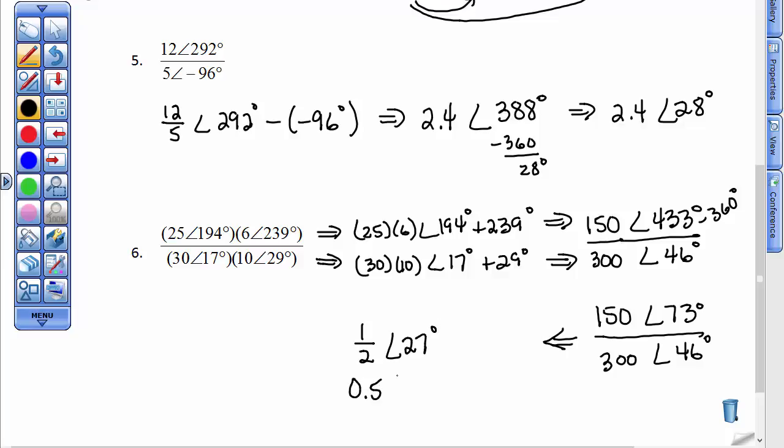Again, it could be written as 0.5 at an angle of 27°. Pretty simple to multiply and divide in polar form. Multiply, you multiply the r values and add the angles because they became like exponents. And then when you divide, divide the r values and subtract the angles.